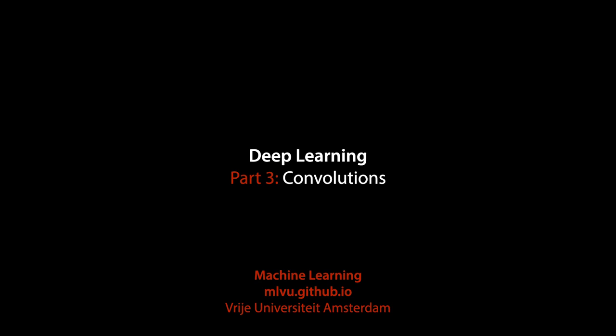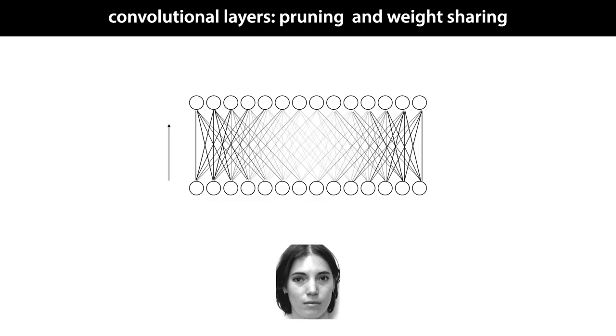So far, we've seen neural networks built up of fully connected layers, where every unit in one layer was connected to every unit in the layer before it. In practice, when you build neural networks, you generally try and adapt the shape of the neural network to the kind of problem you're trying to solve.